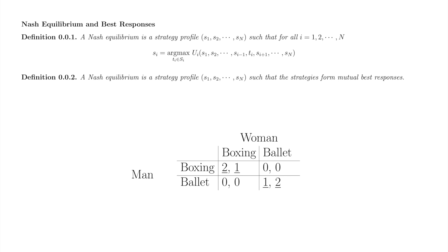By underlining, we've found the man's best responses to the woman's two listed strategies and the woman's best responses to the man's two listed strategies. The matrix entries with both payoffs underlined correspond to Nash equilibria. Both payoffs are underlined in the square corresponding to Boxing-Boxing, so Boxing-Boxing is a Nash equilibrium. Similarly, both payoffs are underlined in the square corresponding to Ballet-Ballet, so Ballet-Ballet is also a Nash equilibrium.